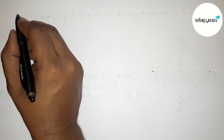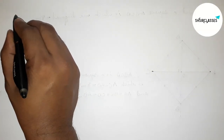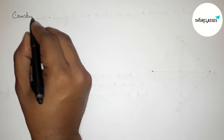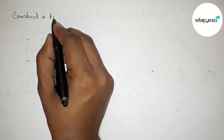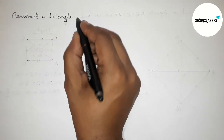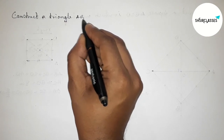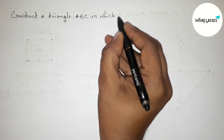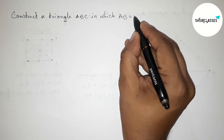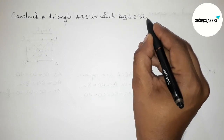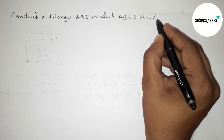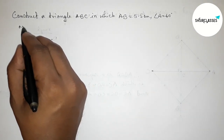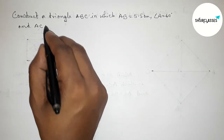Hi everyone, welcome to SI Share Classes. Today in this video we have to construct a triangle ABC in which AB equals 5.5 centimeters, angle A equals 60 degrees, and AC equals 4.5 centimeters. Please watch the video till the end.